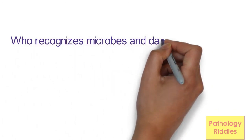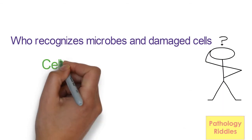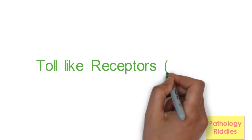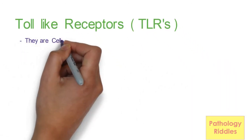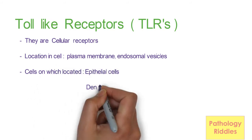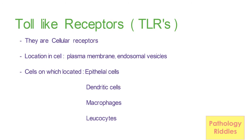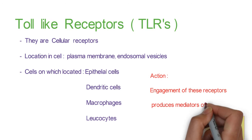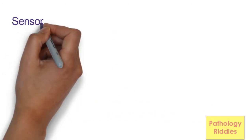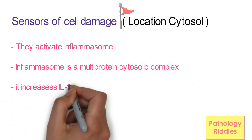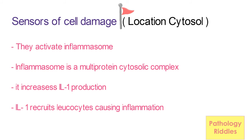Inflammation can also be caused by immune reactions like hypersensitivity, when a normal immune response damages the individual's own tissues. But how are these causative agents recognized by our vascular tissues? They are recognized by cellular receptors and cellular sensors. Examples of cellular receptors are toll-like receptors, located in plasma membranes and endosomal vesicles of cells such as epithelia, dendritic cells, macrophages and leukocytes. Engagement of these receptors produces mediators of inflammation. We also have cellular sensors located in the cytosol, which activate the inflammasome — a multiprotein cytosolic complex — increasing interleukin-1 production, which recruits leukocytes and induces inflammation.